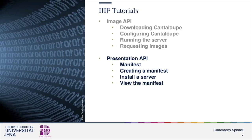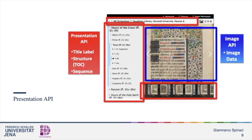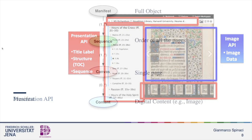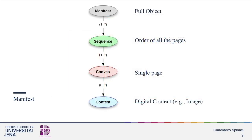After the IIIF tutorial on Image API, let's move to the Presentation API. The Presentation API has information about the title label, the structure, a table of contents, and the sequence of canvases. At the center of the presentation, you see the Image API, which is the image data that we have created before. For doing that, the Presentation API uses a full JSON object called the manifest. The manifest contains one or more sequences, which are the order of all the pages contained in the manifest. A sequence has one or more canvases. Each canvas is a single page, and the canvas can have — or may not have — a digital content, for instance an image.